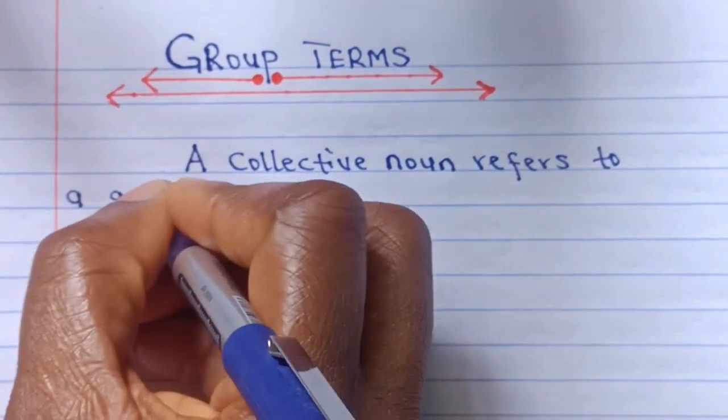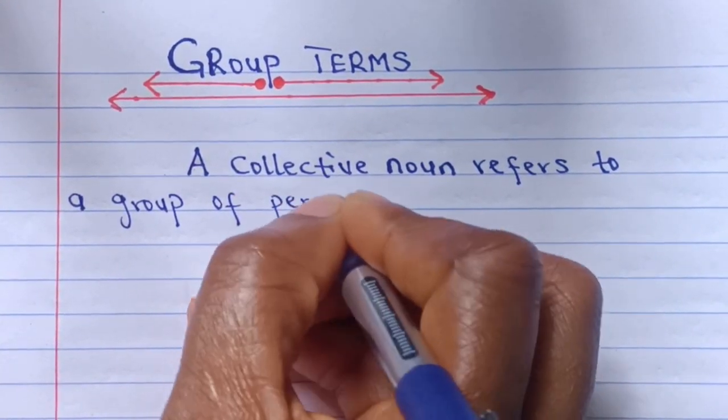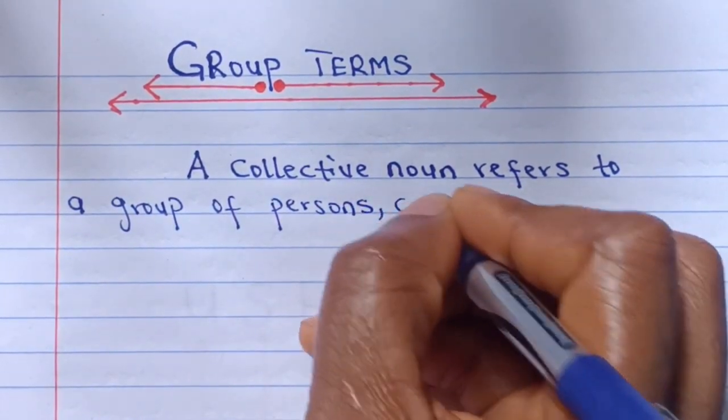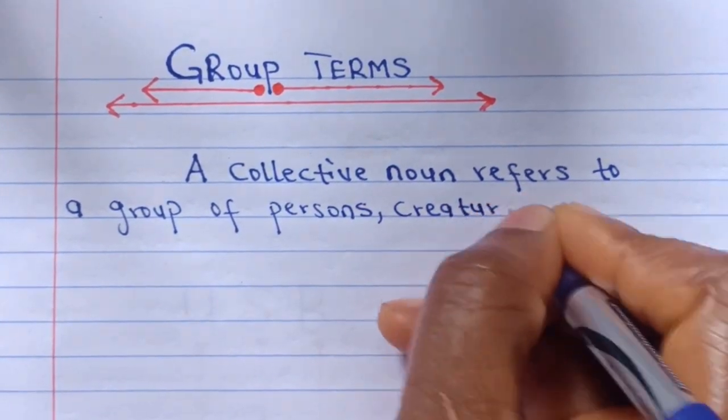A collective noun refers to a group of persons, creatures and things.